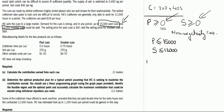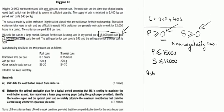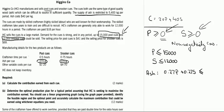After that, the supply of ash is restricted to 5,400 kilograms per period as stated in paragraph one. We use 0.27 kg of ash for pool cues and 0.27 kg of ash for snooker cues. Therefore the inequality for ash will be: 0.27p + 0.27s ≤ 5,400 kg.